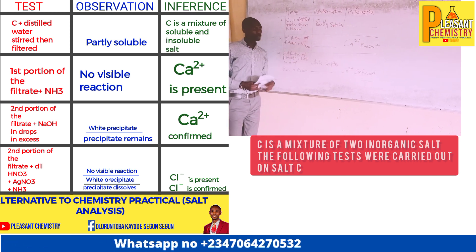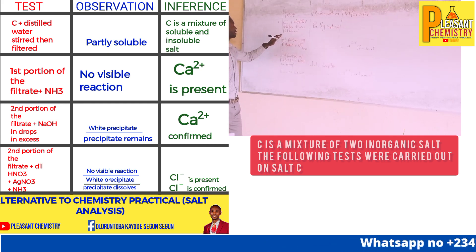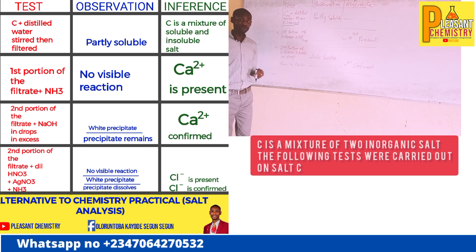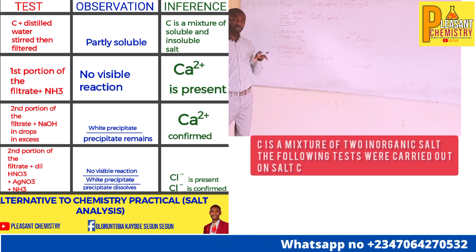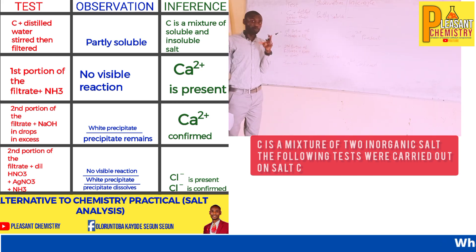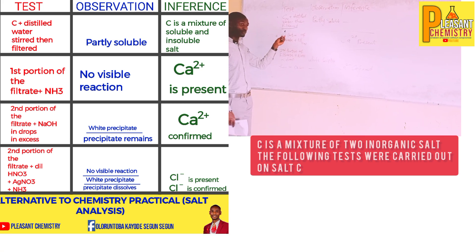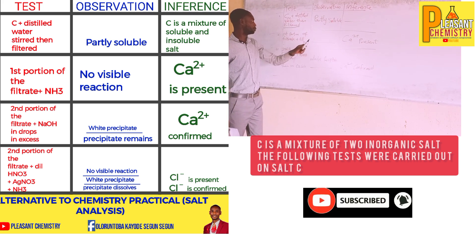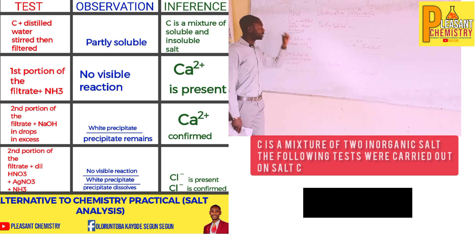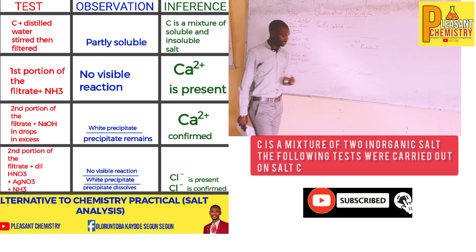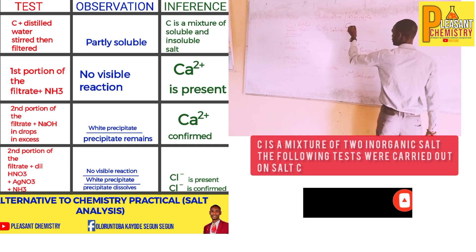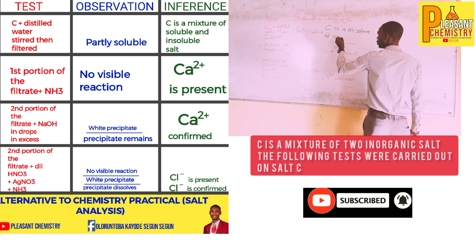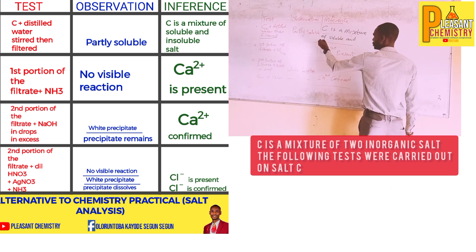C plus water — and then filter. Anytime you see the word 'filter,' it means that salt combination is made up of a soluble and an insoluble component, because before you can filter, you must have an insoluble source. The observation is that sample C is partly soluble. Your inference will be: C is a mixture of a soluble and an insoluble salt.